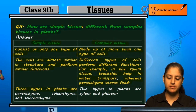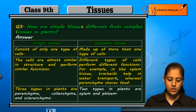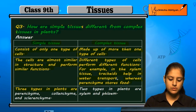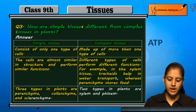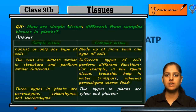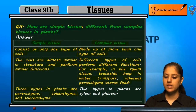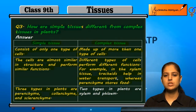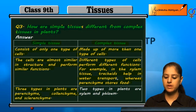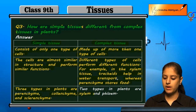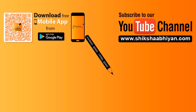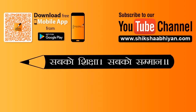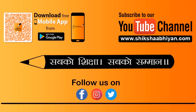The three types of simple tissues in plants are parenchyma, colenchyma, and sclerenchyma. The complex tissues in plants are xylem and phloem.